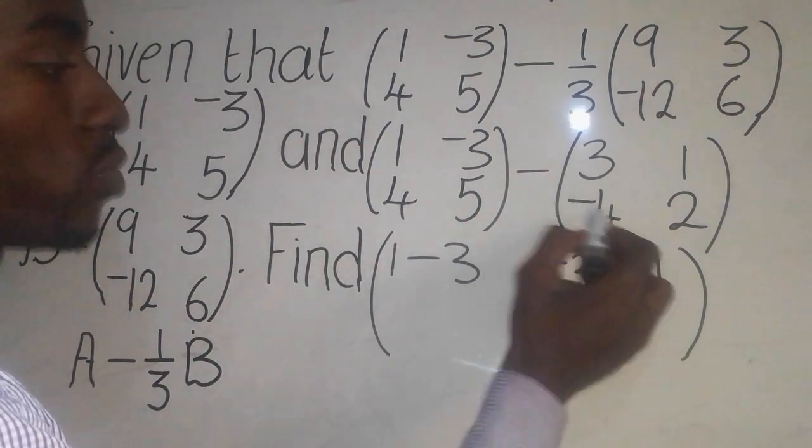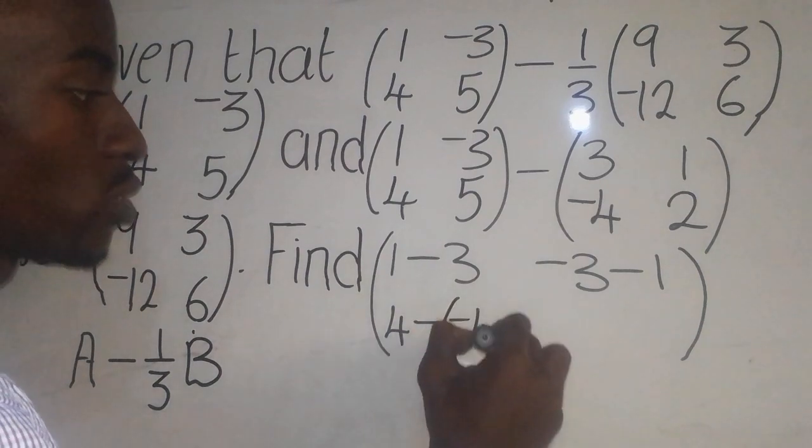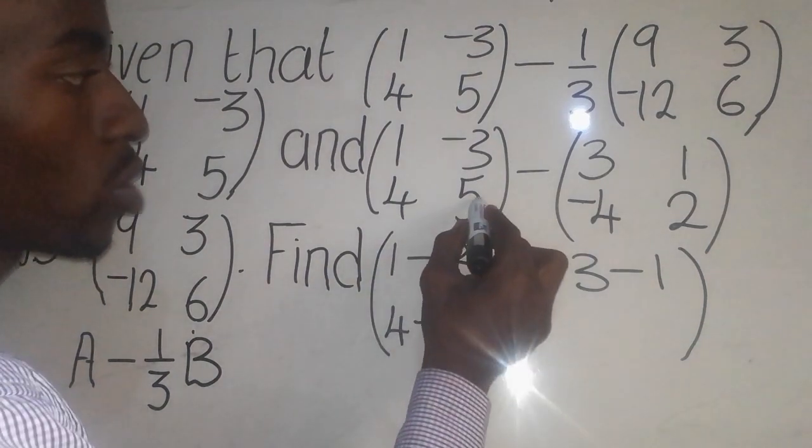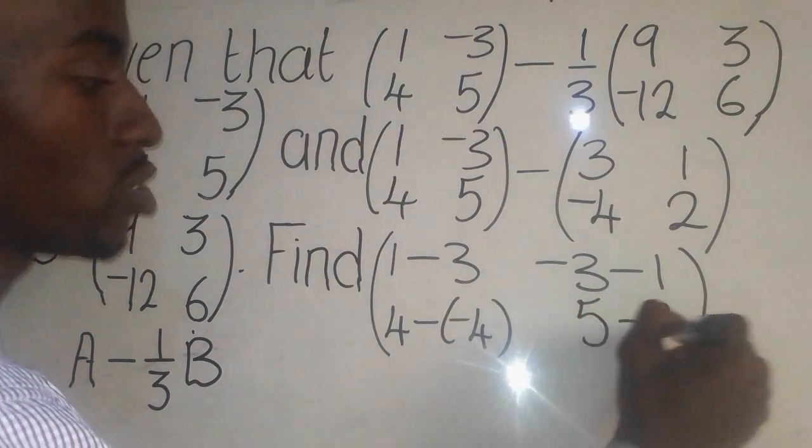We go to this one, 5 minus 2, so 5 minus 2 there. We can now conclude by saying it.